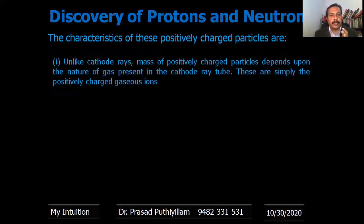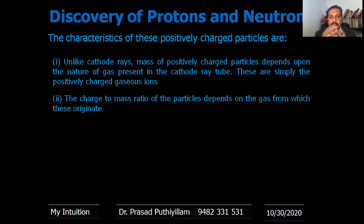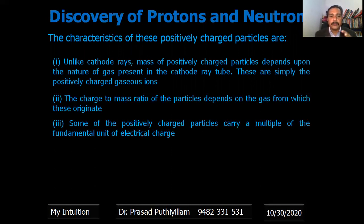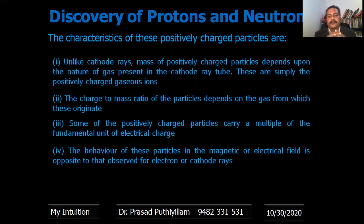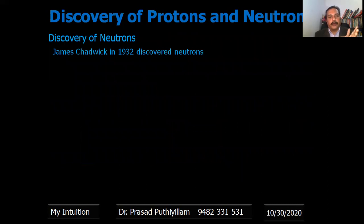The characteristics of these positively charged particles are: unlike cathode rays, the mass of positively charged particles depends upon nature of gas, whereas the cathode rays, the electrons, do not depend upon the nature of gas present in the cathode ray tube. These are simply the positive charged gaseous ions. The charge to mass ratio of particles depends upon the gas from which these are originated. Some of the positively charged particles carry a multiple of fundamental units of electrical charge. The behavior of these particles in the magnetic or electric field is opposite to that observed for electrons or cathode rays.